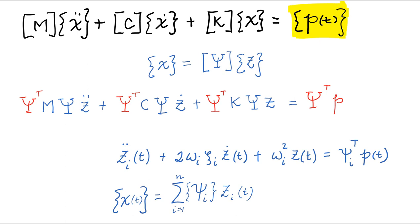This vector p of t represents the external loads that act on the structure at every degree of freedom. So p of t is a vector with n rows and one column. Every row corresponds to a load at the corresponding degree of freedom.